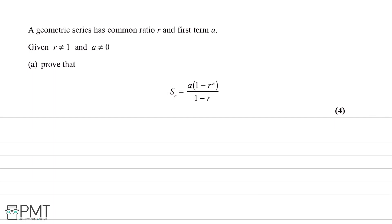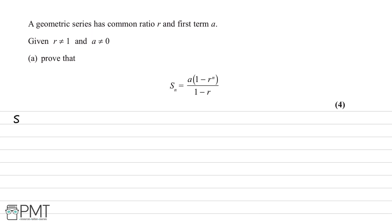To start, we'll think about what Sn is going to be. We'll write Sn as the sum of all the terms, writing it out in full. So our first term is a, then to get the second term we multiply by r to get ar, then ar squared for the third term, then ar cubed, ar to the power of 4, and so on, all the way to a multiplied by r to the power of n minus 1.